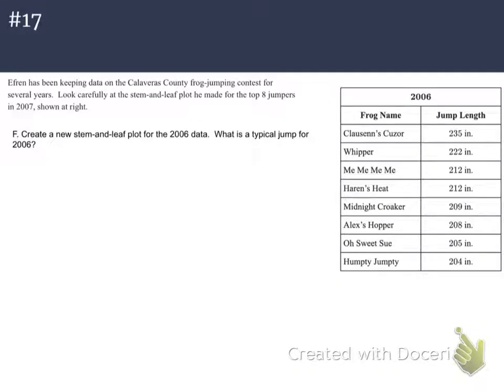Our final part of number 17 says this: create a new stem and leaf plot for the 2006 data. What is a typical jump for 2006? So let's tackle this very first part of the question first.